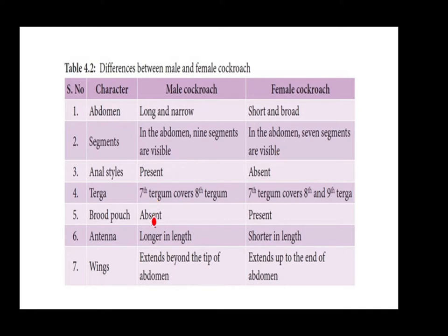Brood pouch is absent in male and present in female. Male antennae are longer; female antennae are shorter. Wings extend beyond the tip of the abdomen in males. This is about the morphology of cockroach.